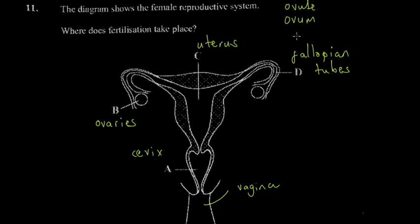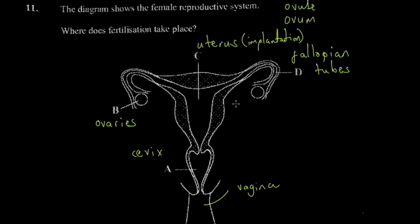The ovary produces the ovum, which moves into the fallopian tube. The sperm moves up through the cervix, and fertilization takes place in the fallopian tube. After fertilization, implantation occurs in the uterus. The uterus is where the body prepares for the fetus to grow — it starts as a zygote and develops into a fetus. So the fallopian tube is the site of fertilization, and the uterus is the site of implantation and development.